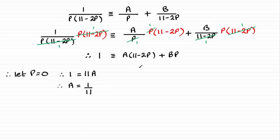And to get B, all I need to do is set this bracket equal to zero. And that would mean that P would equal 11 over 2. So if we say let P equal 11 over 2.